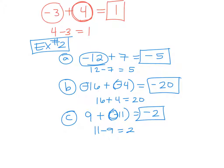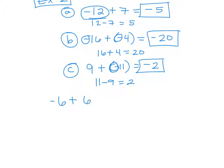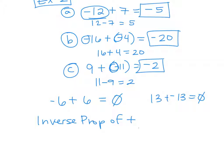Opposites — what's the opposite of 7? Negative 7. What's the opposite of negative 14? 14. So in math, when we talk about opposites, we're talking positives versus negatives. There's a property that says if you add opposites — like negative 6 plus a positive 6 — you will always get zero. Whenever you add opposites, you will always get zero. So 13 plus a negative 13 is zero. That is called the inverse property of addition. The inverse property of addition says if you add opposites, you always get zero.